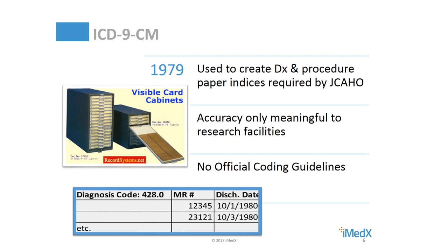To put things into their proper perspective, we are just 18 months into a coding classification replacement for ICD-9-CM, a coding classification that we used for 36 years. When ICD-9 replaced ICD-8 in 1979, it was used to code diagnoses and procedures into paper indices solely for the purpose of meeting a JCO requirement. The exception were research facilities who wanted to find cases based on diagnosis or procedure codes. Coding and indexing was a manual task. There were no official coding guidelines, so pretty much hospital coders made up their own as they went along.